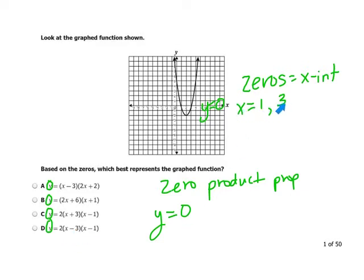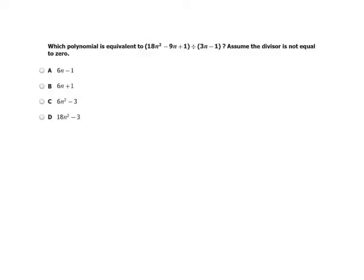So now we can go in and look at the actual numbers. Well, x minus 3 equaling 0, yep, x would equal 3. And x minus 1 equaling 0, yep, x would equal 1. So those are our two answers, so it's gotta be D.